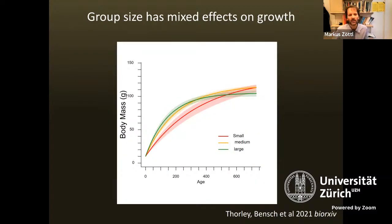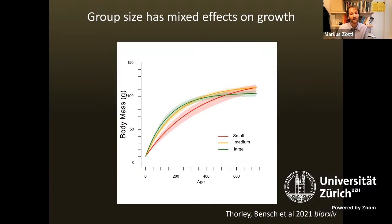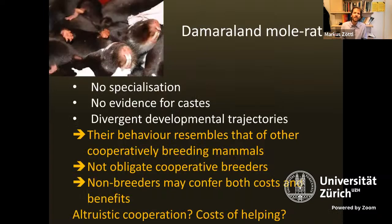We found no effect of group size on adult survival, and when we looked at growth rates, pups born in large groups initially grow faster until around 200–300 days of age, but then their growth declines so that pups from small groups ultimately reach a higher asymptotic mass — suggesting possible costs of living in large groups, potentially due to within-group competition. Overall, Damaraland mole rats show no specialization, no evidence for casts, and no evidence for divergent developmental trajectories. Their behavior resembles that of other cooperative breeding mammals.